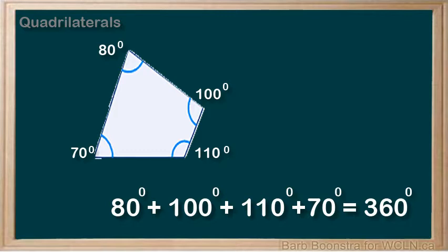In this quadrilateral, we can add 80 plus 100 plus 110 plus 70 to make 360 degrees.